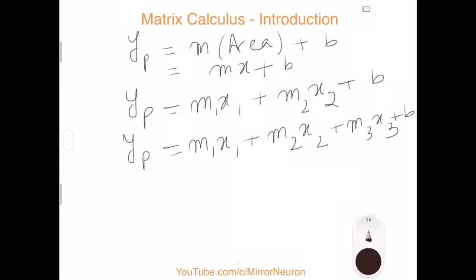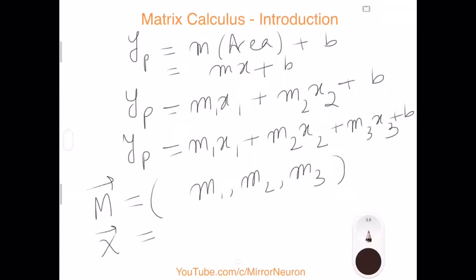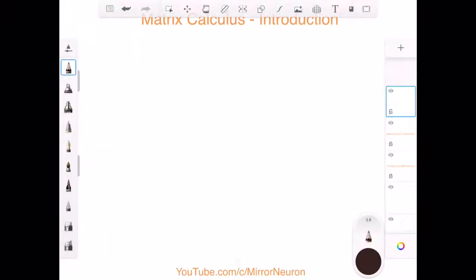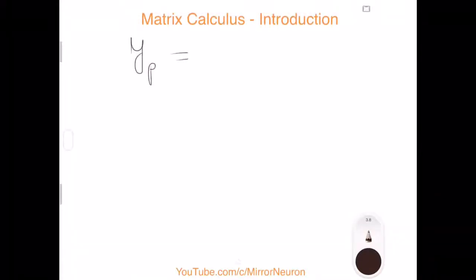If I consider M, capital M, as a row vector which can have elements like m1, m2, m3 and so on, and if I have an X vector which can be a column vector with elements x1, x2, x3, then I can represent my sale price in vector notation as M dot product X plus b.